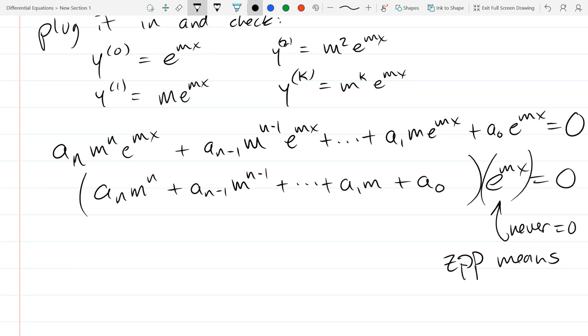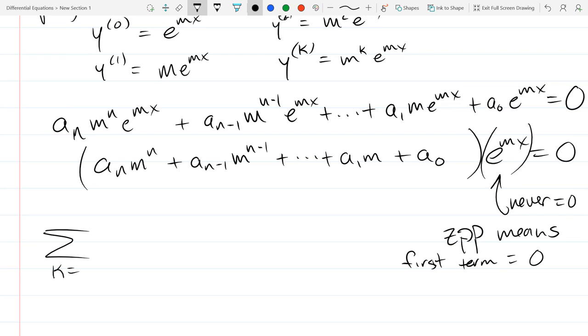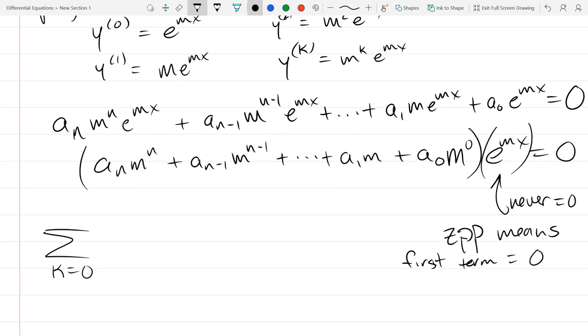So what can I conclude given that the second product is never zero? Everything on the left one is zero. Yep. Our first one has to be zero. So zero product property, second one's not zero. I know the first guy has to be zero. So our zpp means first term is zero. And this looks like a good time for summation notation.